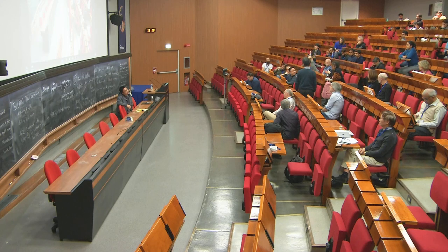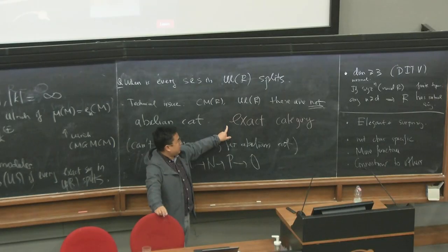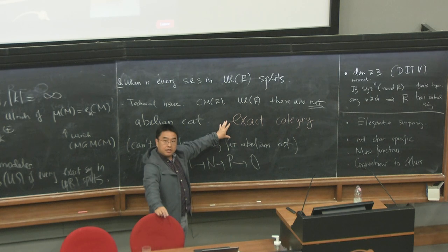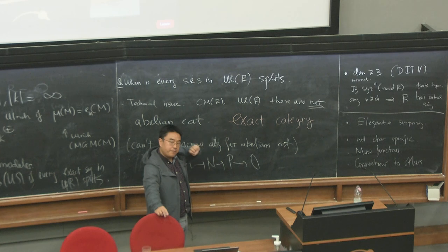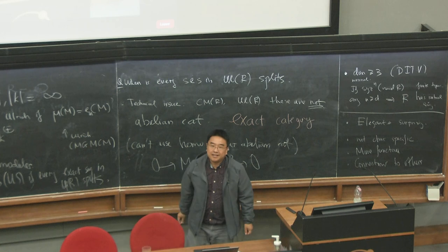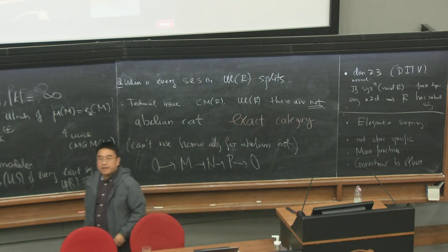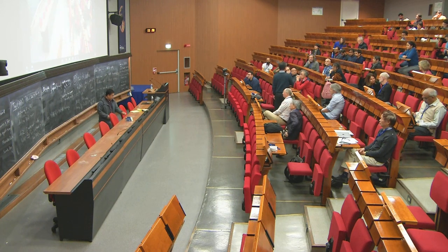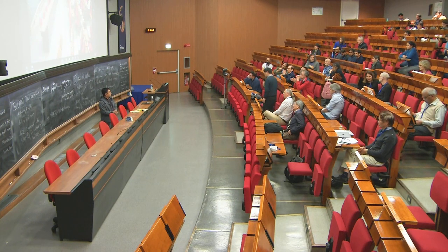Question: If this category is not abelian, is it possible it is triangulated? That's another good question. If R is Gorenstein and you look at the stable category, then it's a triangulated category, closely related but not quite the same. Exact category is the right keyword here. Let's thank the speaker again.